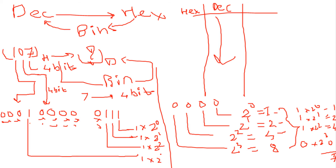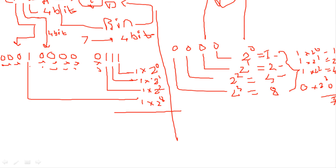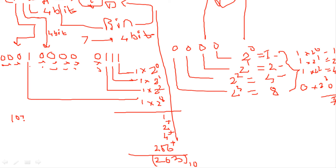Continuing at position 8: 1 into 2 raise to 8 = 256. Now adding all results: 1 plus 2 plus 4 plus 256 = 263. So we converted 107h in hexadecimal to the decimal number 263.